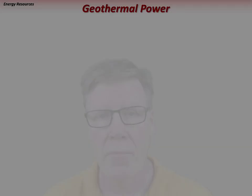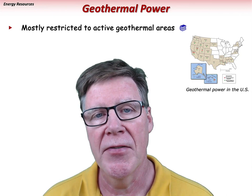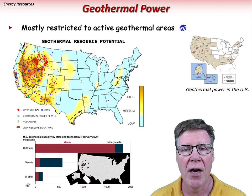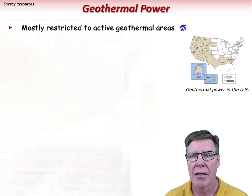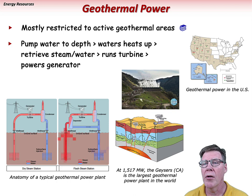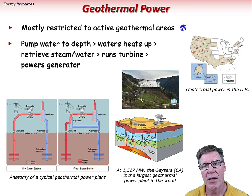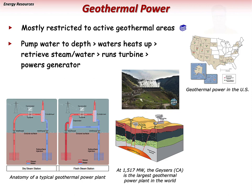Geothermal power is usually restricted to active geothermal areas and is most widespread in the western U.S., especially in California and Nevada. The basic methodology is to pump water to depth, where it heats up and the water or steam is retrieved to drive a turbine that powers a generator. The Geysers, a 1,517-megawatt geothermal plant in California, is the largest of its kind in the world. In Arizona, areas with geothermal potential are mostly located in the Basin and Range in the southern part of the state.